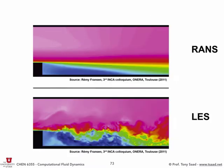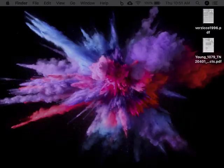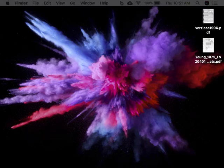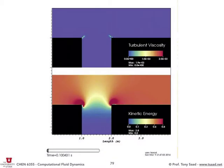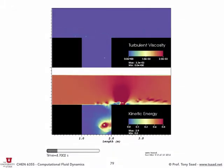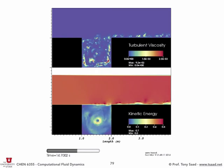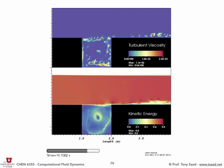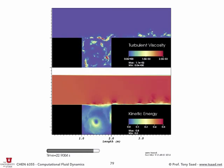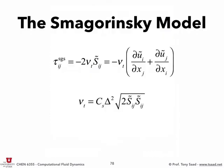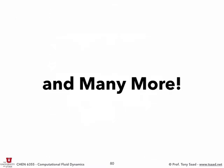Last time we went through the Smagorinsky model. I showed a simulation from Wasatch showing the turbulent viscosity, how it changes in space and time depending on the rate of strain tensor S_ij. We defined the eddy viscosity in the Smagorinsky model as some constant times the square root of the magnitude of the rate of strain tensor. There are many more models beyond that.